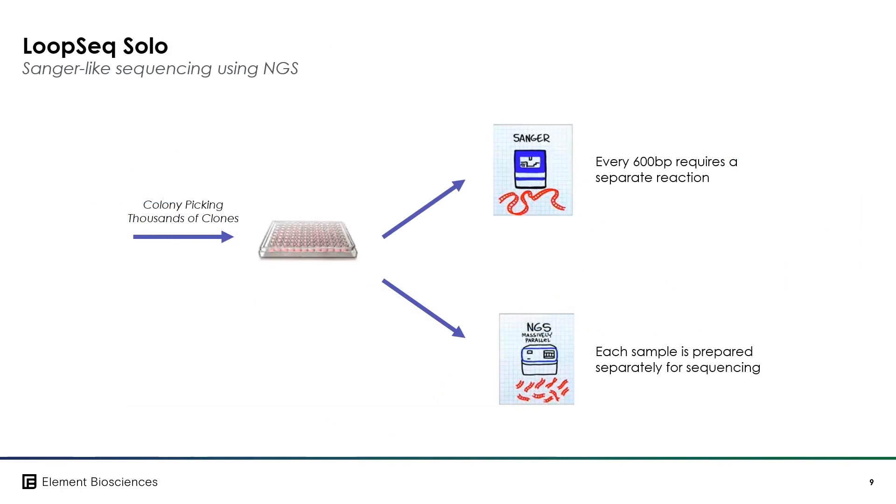The final application of the LoopSeq technology is LoopSeq Solo, which is an adaptation of our long read sequencing technology for clonal sequencing. It is an NGS replacement for Sanger sequencing, where for each presumptive clonal sample we get a single long read FASTQ sequence.